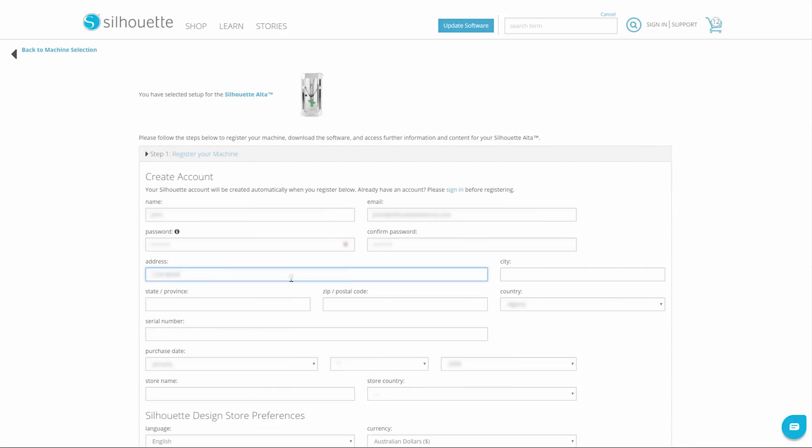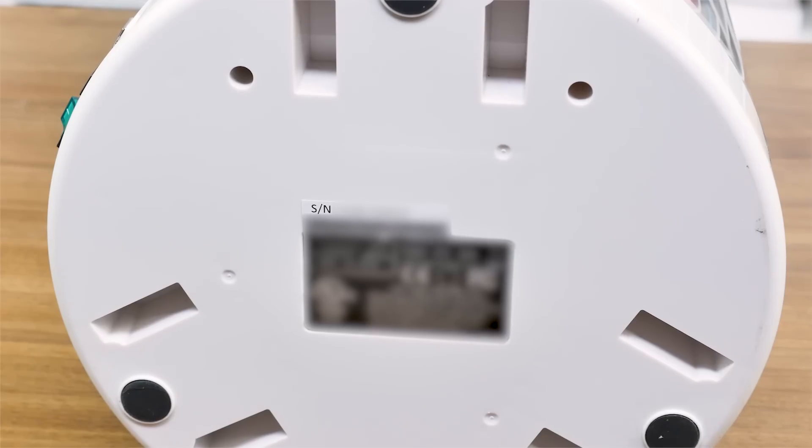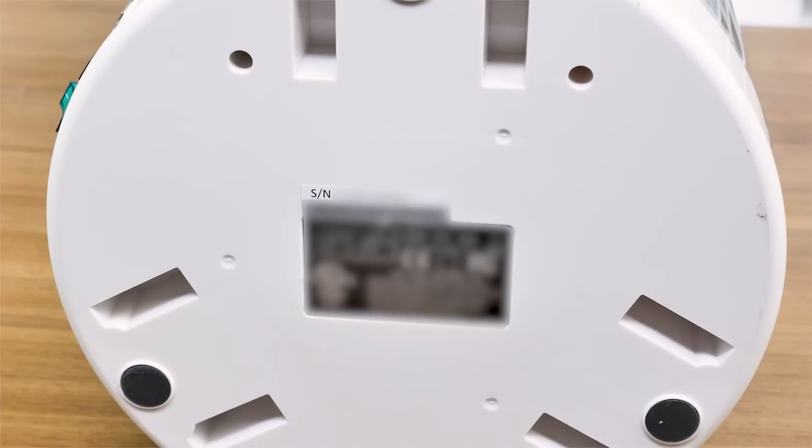Select your language and the Alta machine. Then proceed to fill out all of the needed information. You will find a unique serial number on the bottom of the machine.